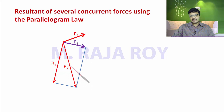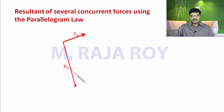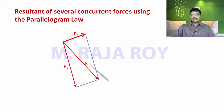The third stage is finding the final resultant by taking R2 and F4. Draw the parallels, then from the corner draw the diagonal. This is the final resultant R. By repeatedly applying the parallelogram law you can find the final resultant of any number of concurrent forces.